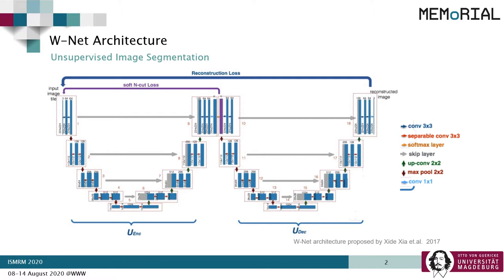This double U-Net architecture employs two cascading units for unsupervised segmentation of 2D RGB images, where the first unit is expected to generate the segmentation, which is then forwarded to the second unit. The second unit is expected to reconstruct the original input image. Soft NCAS loss is calculated on the output of the first unit, and reconstruction loss is calculated on the output of the second. We have used this architecture as our base model.